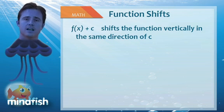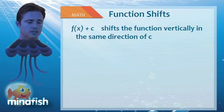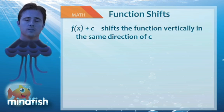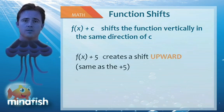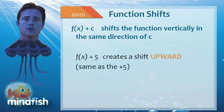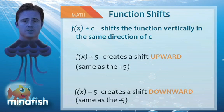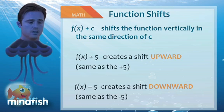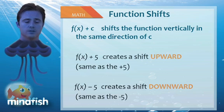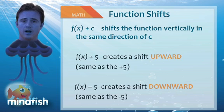When you add things outside of a function, they create changes in the same direction. So f of x plus 5 would create a shift up 5, whereas f of x minus 5 would create a shift down 5. Now, what is the equation of f of x squared shifted up 2 units and right 3 units? I'll give you a minute to try it, and then I'll give you the answer.